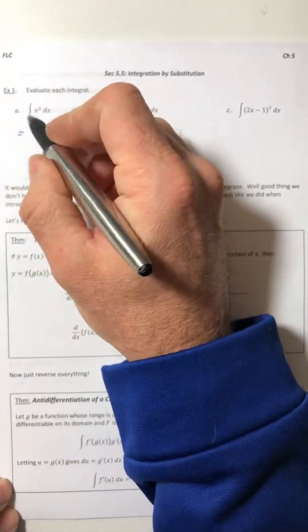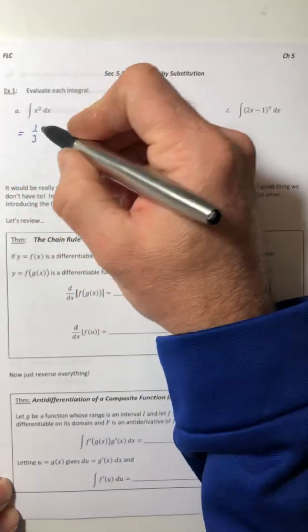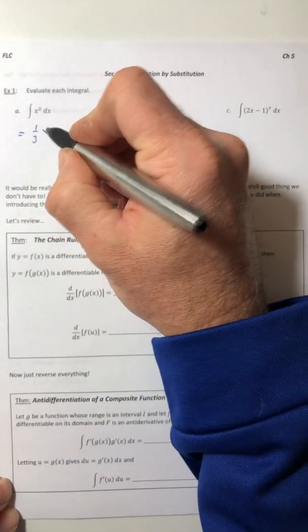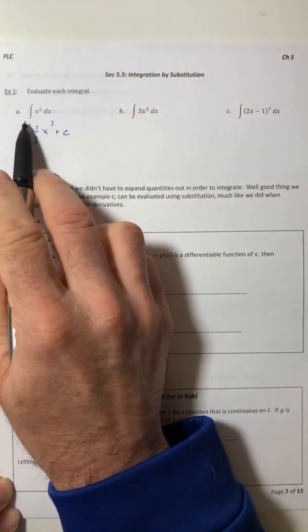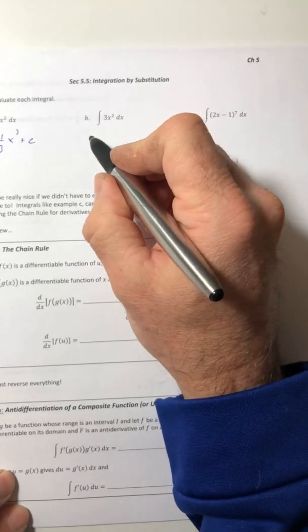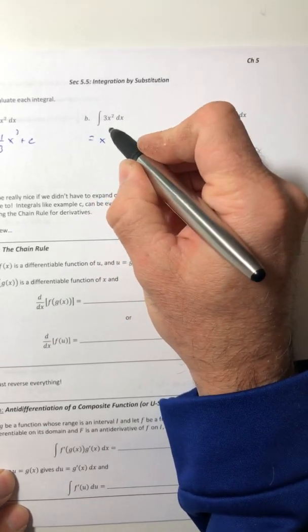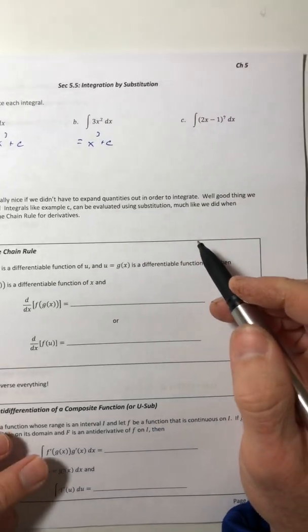Let's start with example 1, evaluate each integral. The x squared becomes one third x to the third plus c because it's an indefinite integral. Part b, x to the third plus c. Not bad.